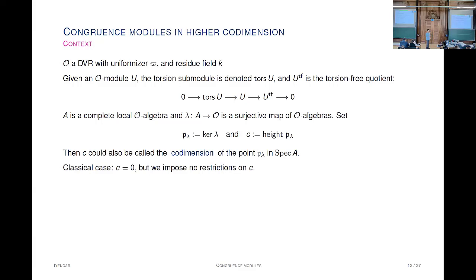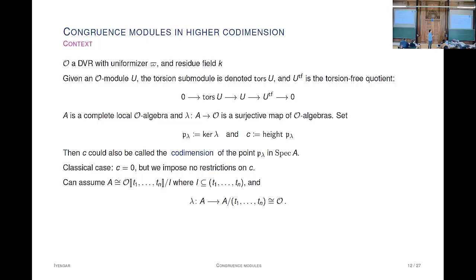Really, the rings you're looking at are quotients of power series over O, by some ideals, and the augmentation is where you're killing the variables. We're interested in the category of pairs consisting of this complete local ring, with O-algebra A and the map lambda. You think of A as being fixed and lambda is something you get to choose—you want to discover something about A or A-modules and you can pick various lambda to probe A and M.